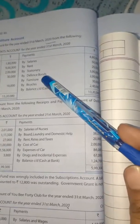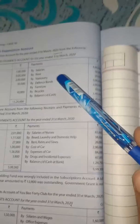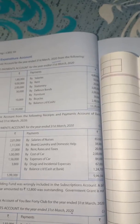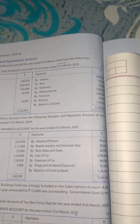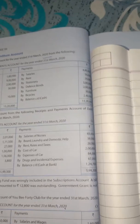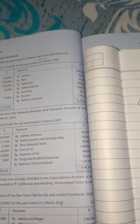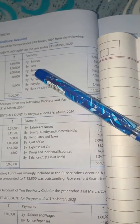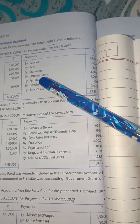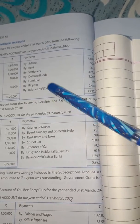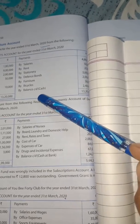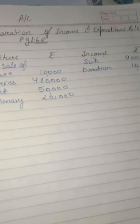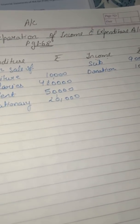Next in the question, defense bond is given. Defense bond is part of the balance sheet — it is a security issued by the government, so it will not appear here. Next, bicycle — this is also an asset. Then balance C/D, which is the closing cash balance — it goes to the closing balance sheet. So in income and expenditure, only subscription and donation will appear.